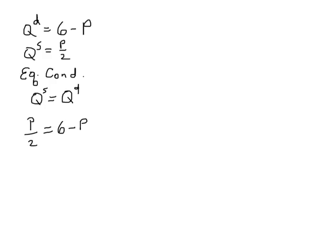And so I can add P to both sides. So I get 3P over 2, or 3 halves P is equal to 6. And then I multiply both sides by 2 thirds. And lo and behold, P is equal to 4.